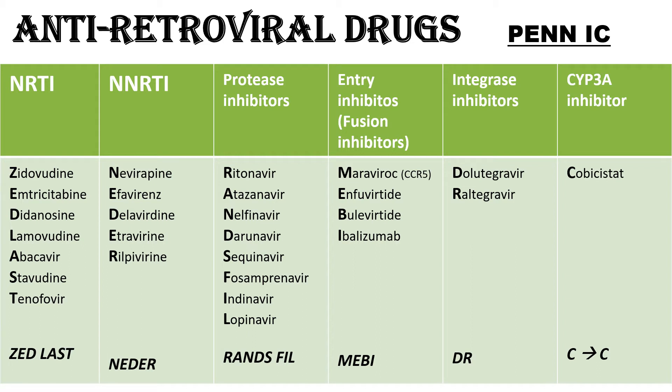Among the NNRTIs (Non-Nucleoside Reverse Transcriptase Inhibitors) we have Nevirapine, Efavirenz, Delavirdine, Etravirine, and Rilpivirine. The mnemonic here is NADAR. Among the Protease Inhibitors we have Ritonavir, Atazanavir, Nelfinavir, Darunavir, Saquinavir, Fosamprenavir, Indinavir, and Lopinavir. The mnemonic here is RANSFIL.